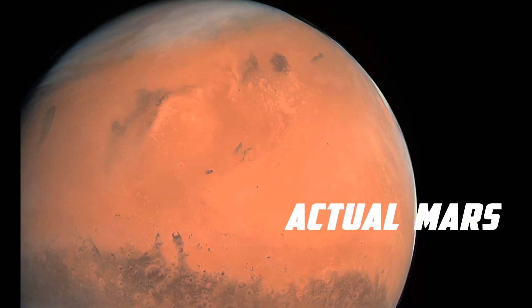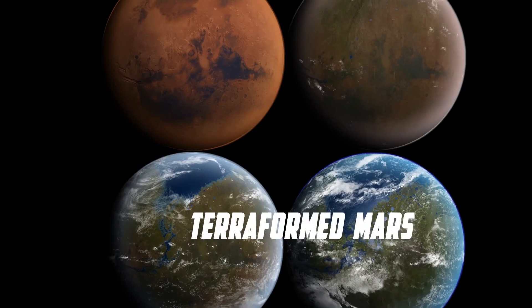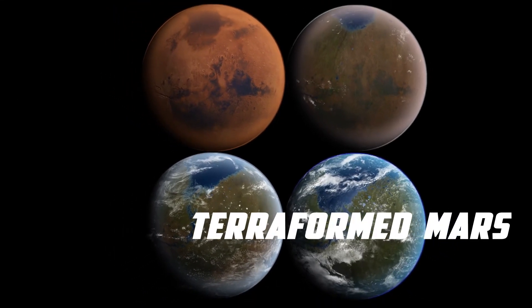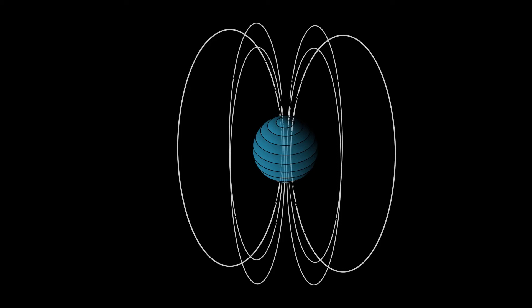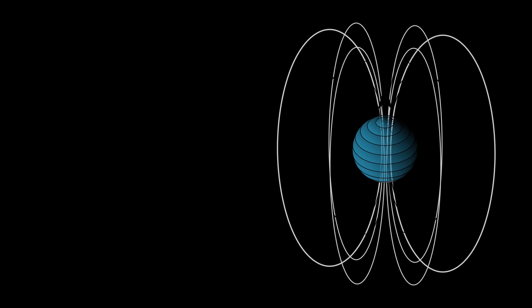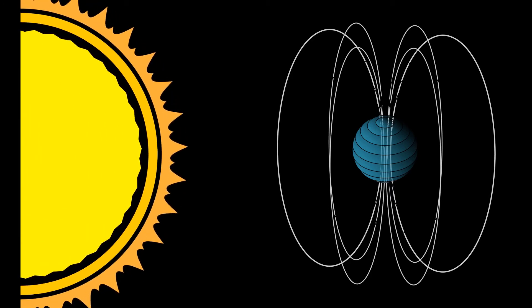Also, there are many possibilities of terraforming Mars too. Compared to Venus, Mars is easy to terraform. The only common problem with both the planets is they lack magnetic field around them like Earth to protect us from disease-causing rays from Sun.